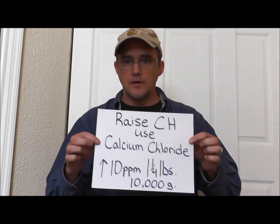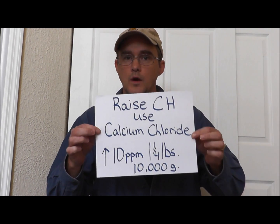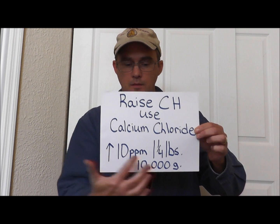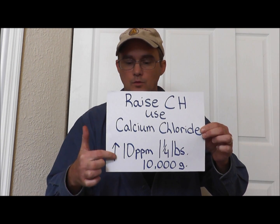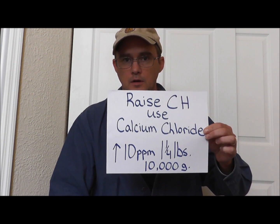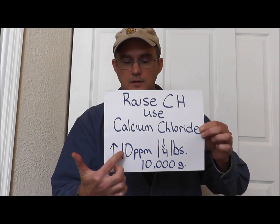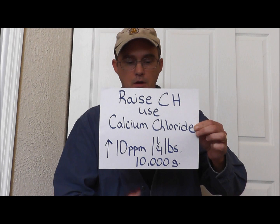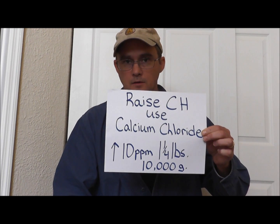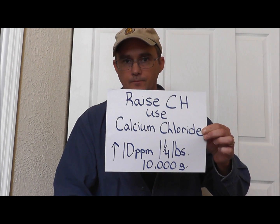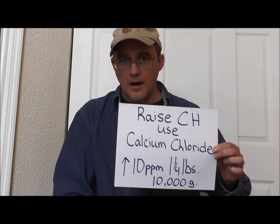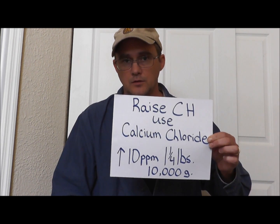Here's what you need to know about calcium chloride. The baseline is: to raise your hardness 10 parts per million per 10,000 gallons, you will use one and a quarter pounds of calcium chloride. If you can make cookies from scratch, you can raise your calcium hardness.